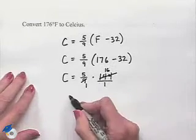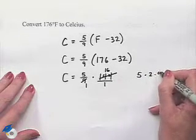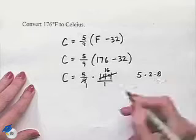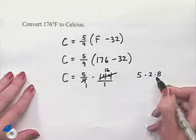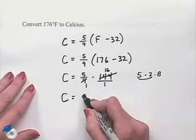And then we can multiply here. One way to do the multiplication is to think of this as 5 times 2 times 8, where our 16 we separate out into 2 times 8. And now we can multiply 10 times 8 to give us 80 degrees.